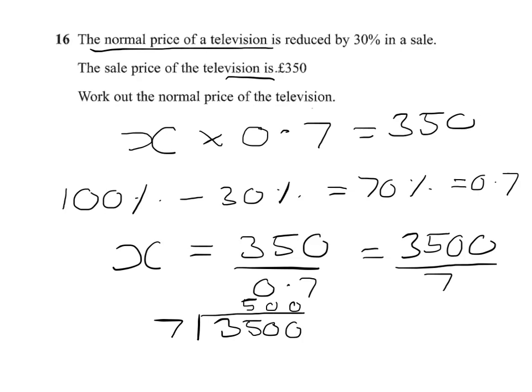So we've got an answer then of 500 pounds. We can check that by just checking that 500 times 7 does give us 3,500. And you should realize you've got your 2 noughts, you do 5 7s, and it definitely does make 3,500.